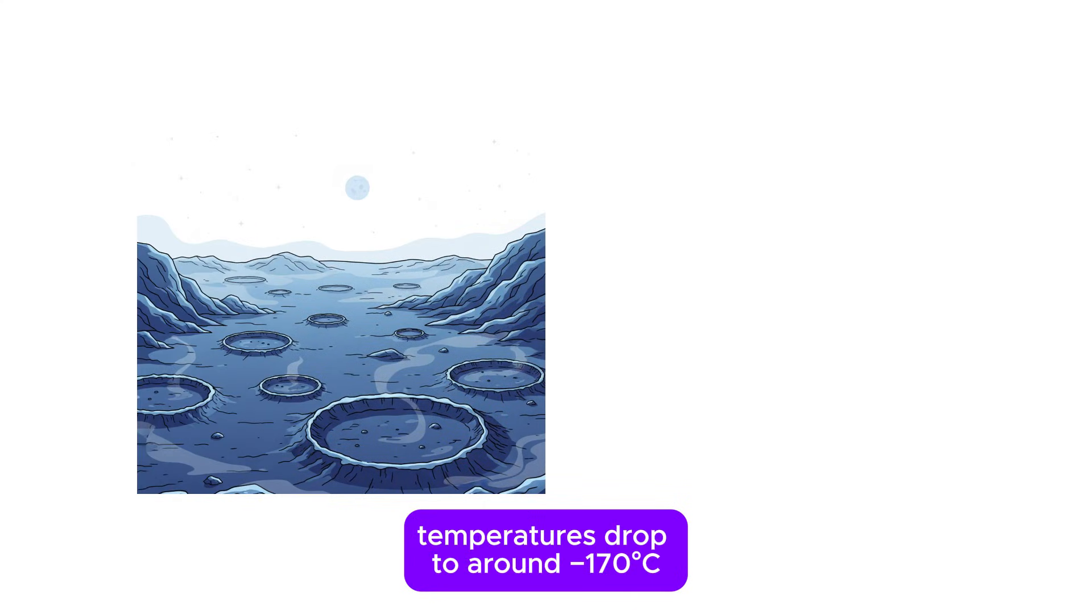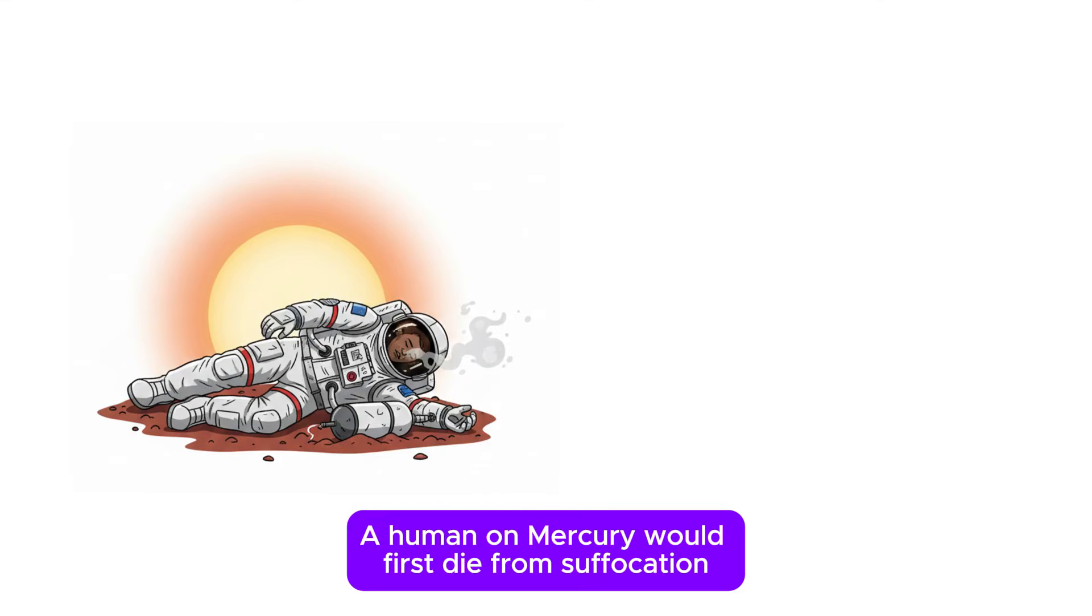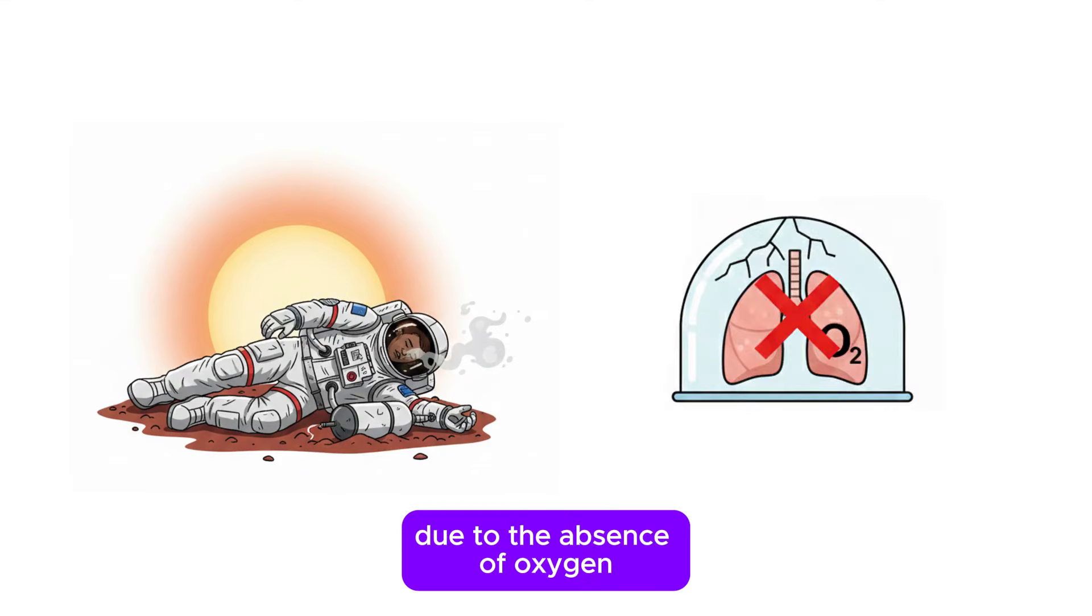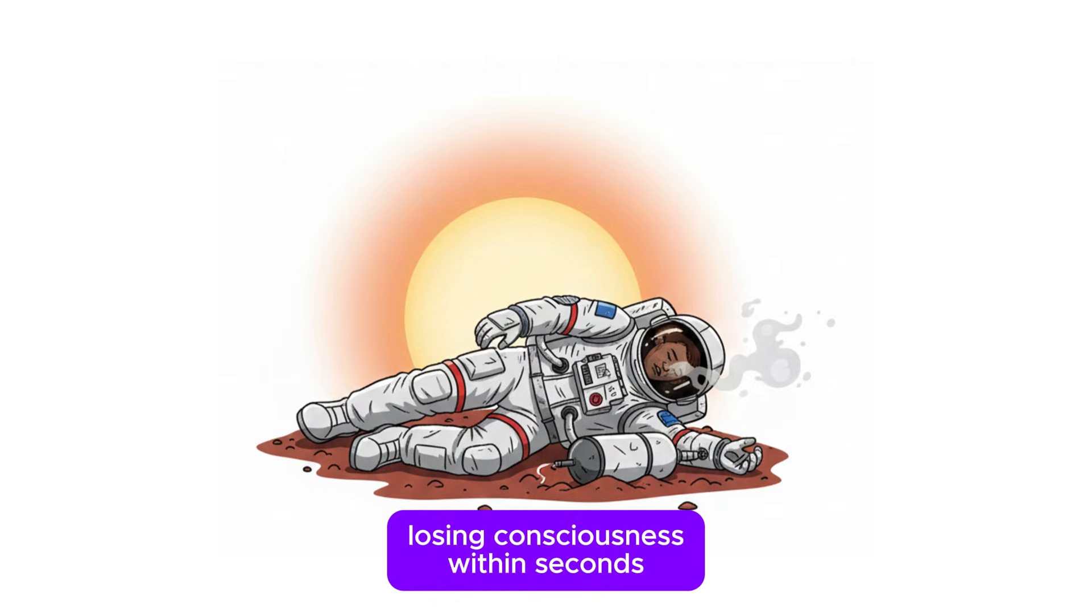At night, temperatures drop to around negative 170 degrees Celsius. A human on Mercury would first die from suffocation due to the absence of oxygen, losing consciousness within seconds.